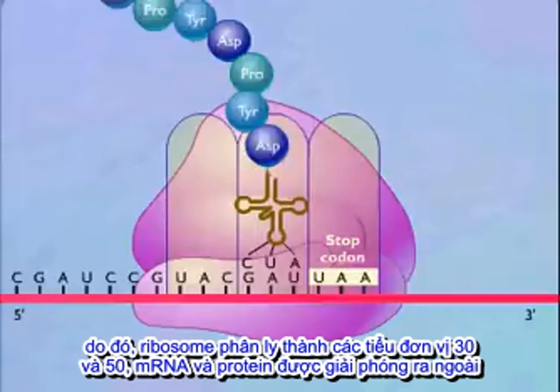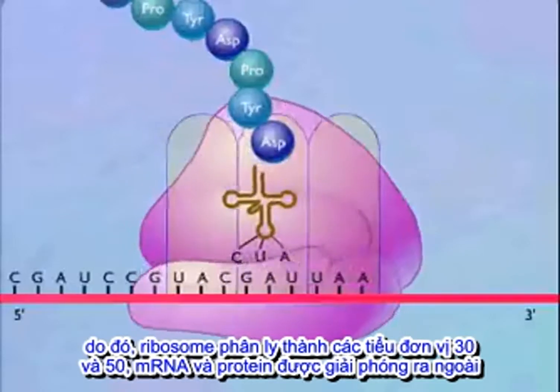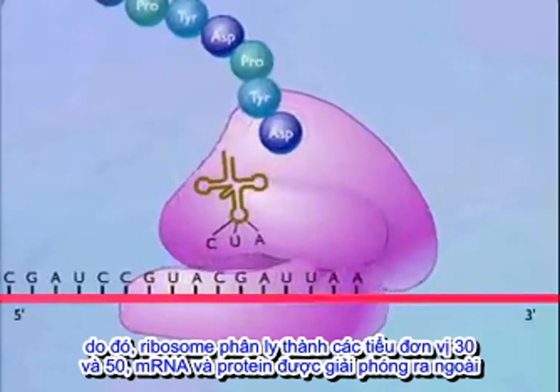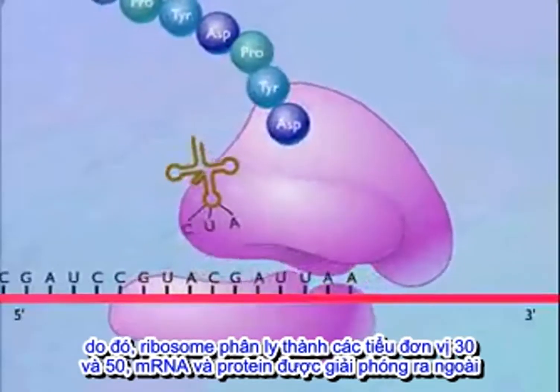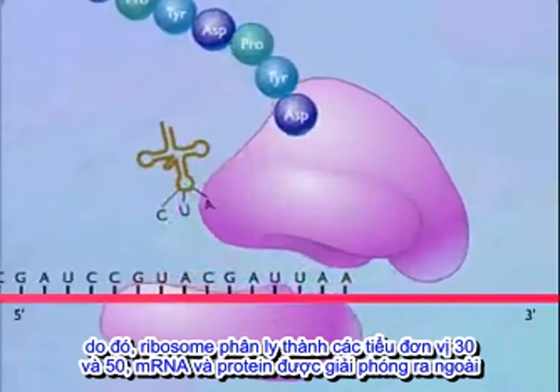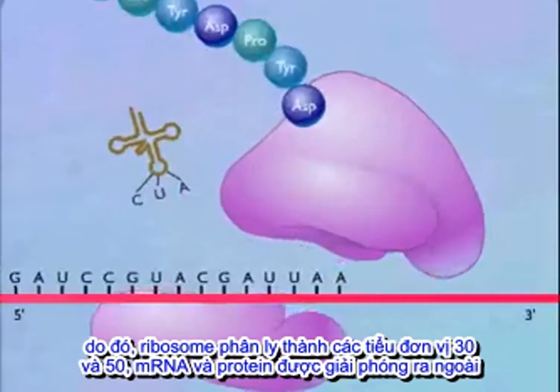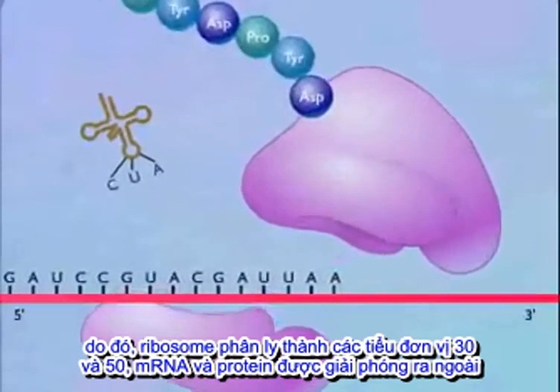The ribosome dissociates into the 30S and 50S subunits, and the messenger RNA and protein are released.